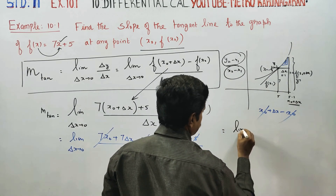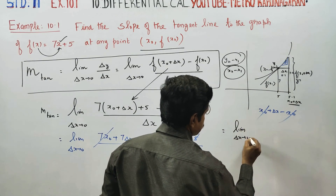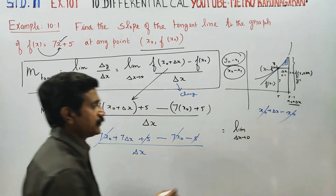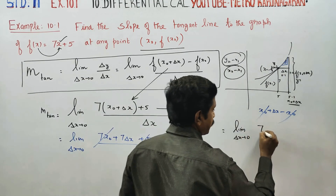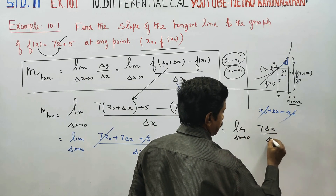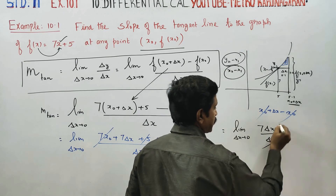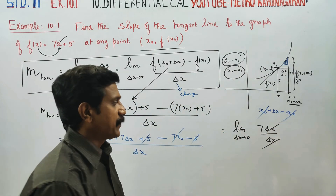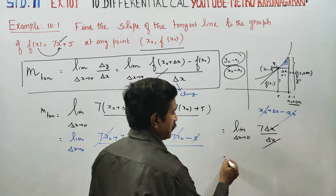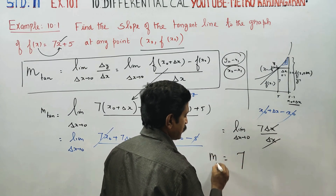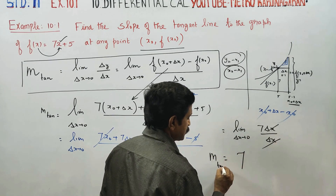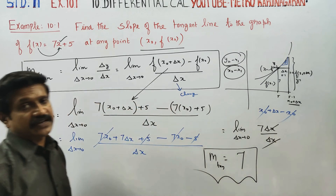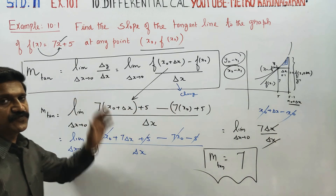Taking the limit as delta x turns to zero, we have 7 delta x divided by delta x. The delta x terms cancel, and applying the limit directly gives 7. So the slope of the tangent is 7. This is the slope of the tangent formula in action.